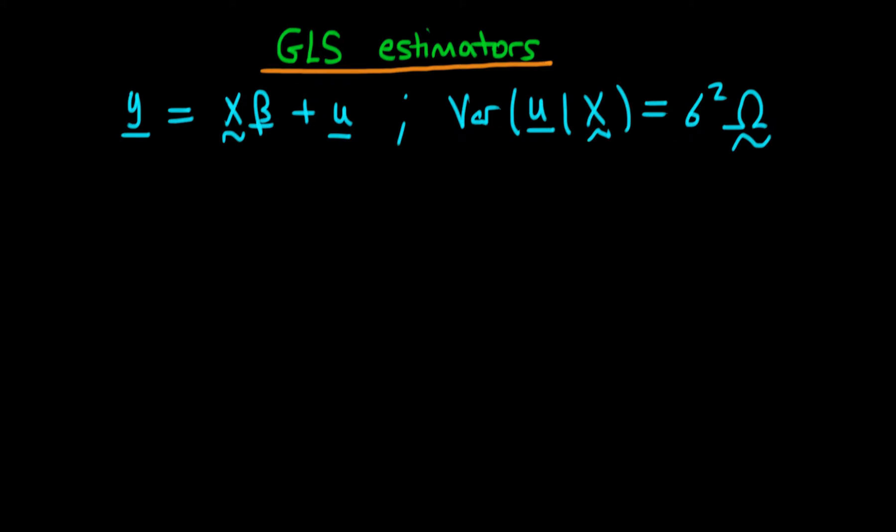And what we're going to do here in GLS is we're going to actually transform our model using some transformation matrix which I'm going to call P. So we're going to multiply both sides of our system by this transformation matrix P, which as yet I haven't specified. Indeed, we're actually going to derive it in the course of the next few videos.